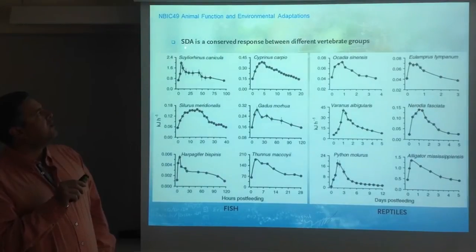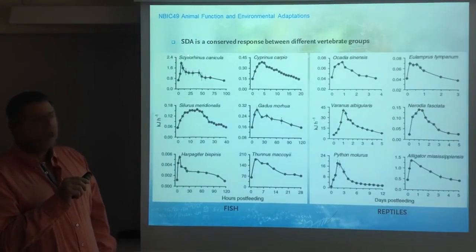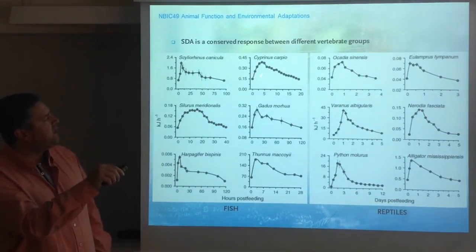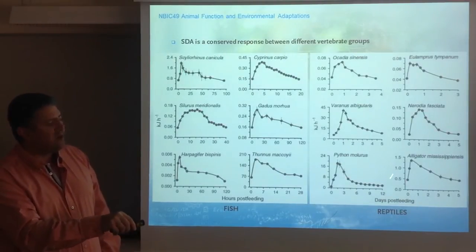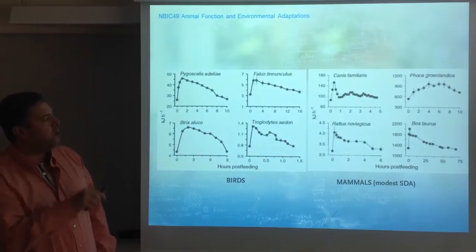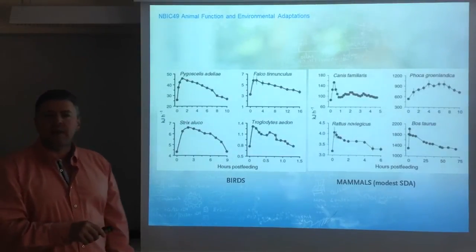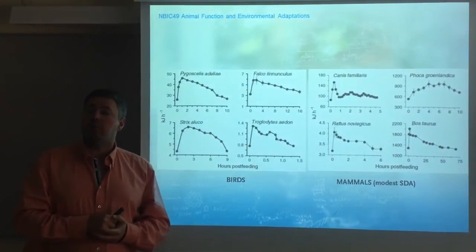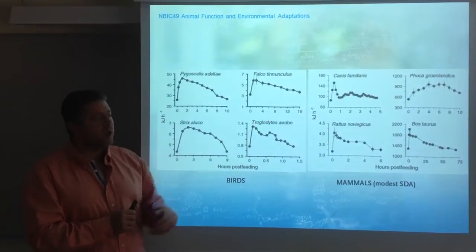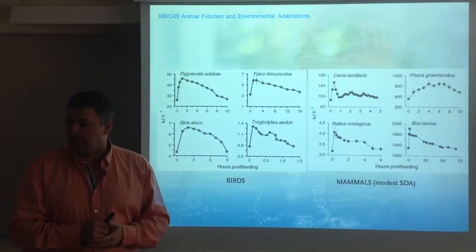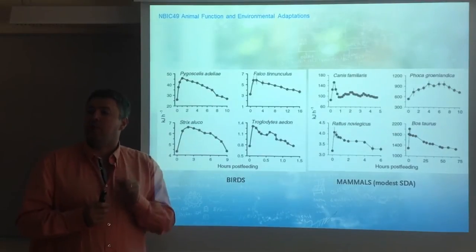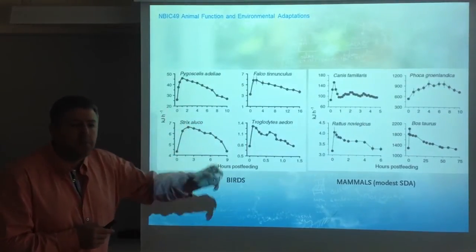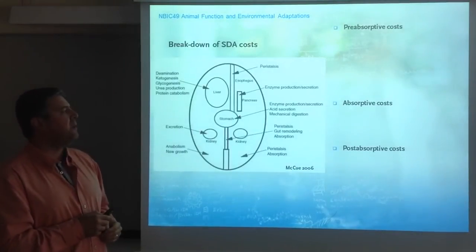What's important is that the specific dynamic action response is conserved between and among invertebrate groups, fish, reptiles, birds, and mammals — all show exactly the same thing. In mammals, the specific dynamic action is somewhat reduced, mostly because most mammals studied are animals that eat regularly. An animal that eats regularly will show a smaller specific dynamic action. It's a very conserved response — all animals, even invertebrates, will show a specific dynamic action after food.